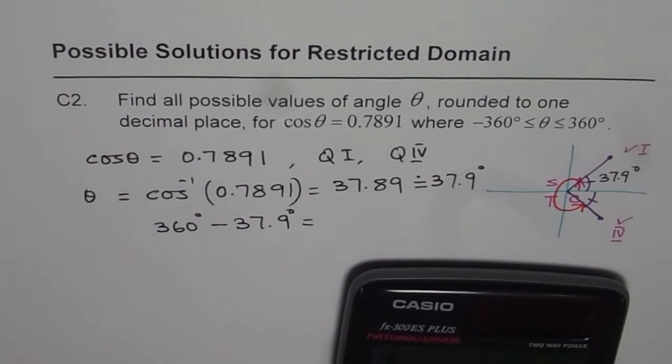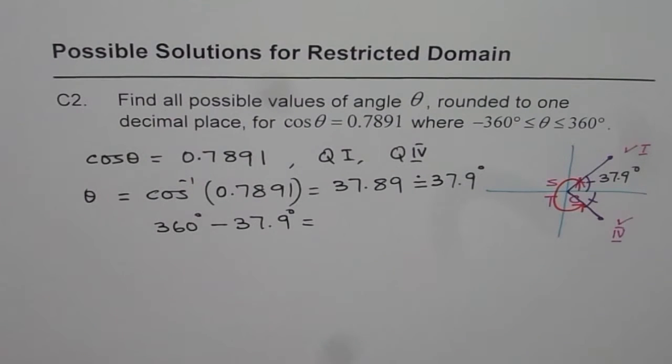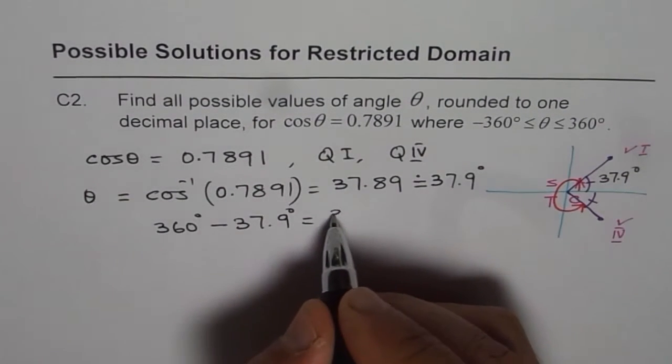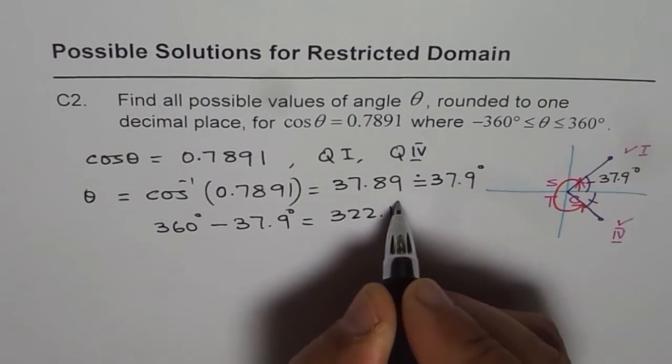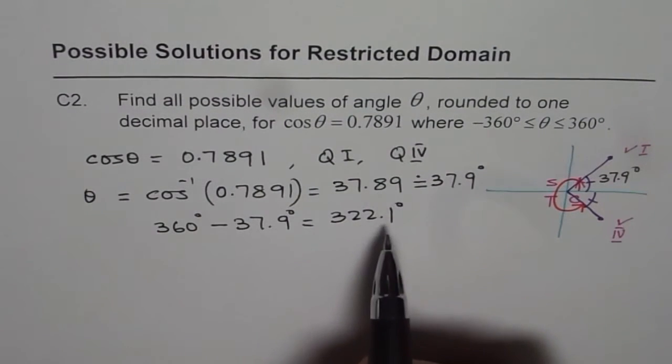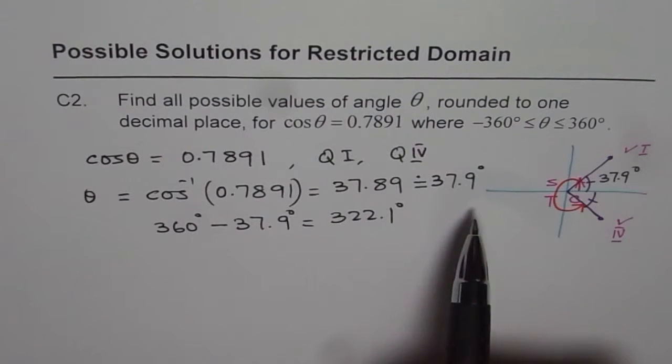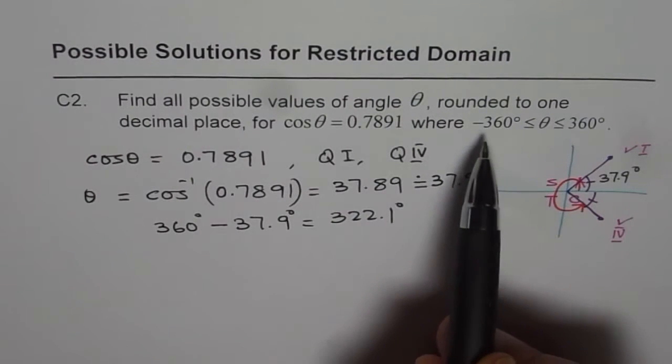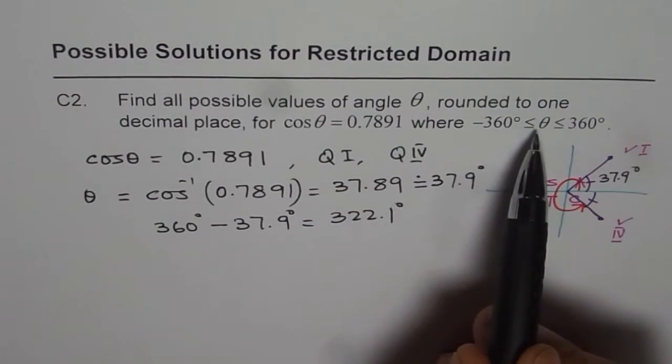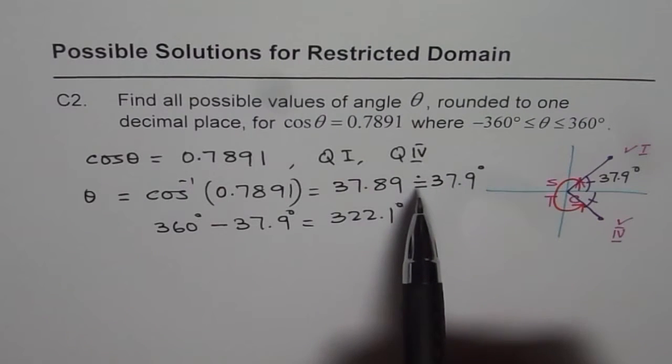So we can again use calculator. So we get 360 minus 37.9, which is equal to 322.1. So we get 322.1 degrees. Well, these are the angles which we have got from 0 to 360 degrees. How do you get the angles between minus 360 and 0?